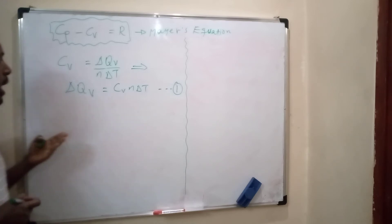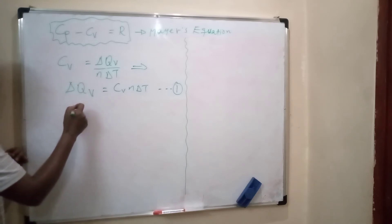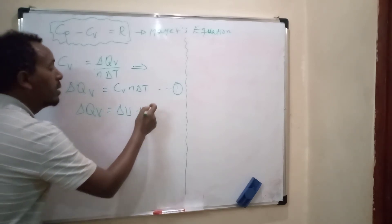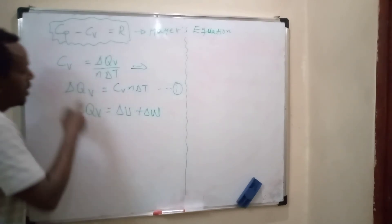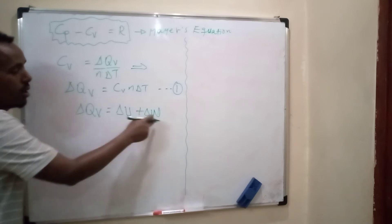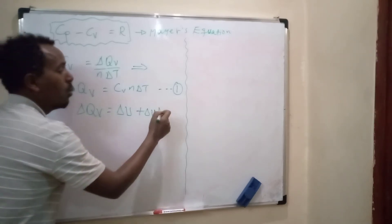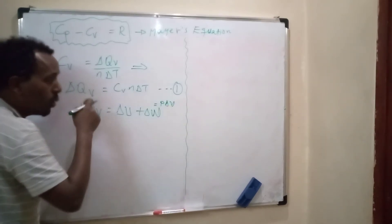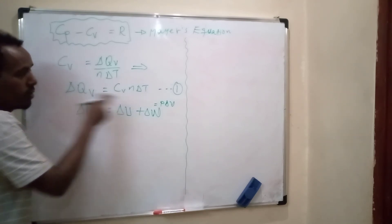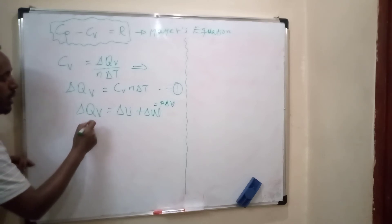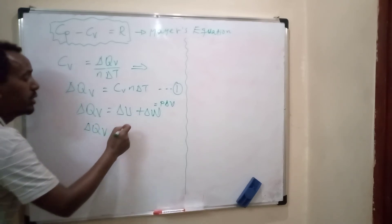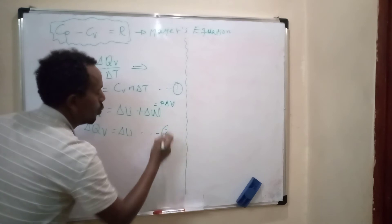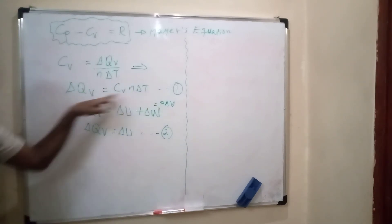In an isochoric process, or at constant volume, the first law of thermodynamics gives: ΔQv = ΔU + W. Since the process is isochoric, work W = P·ΔV = 0 because volume is constant. Therefore, ΔQv = ΔU. Take this as equation two.